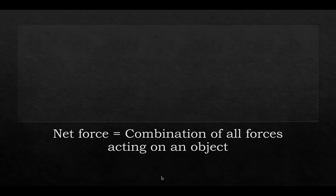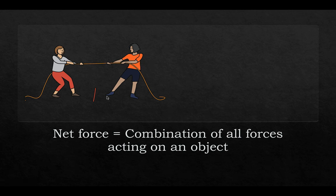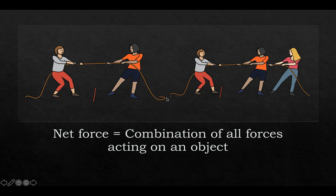Net force is the combination of all forces acting on an object. You think of one object, identify what forces are acting on it and how big they are, then you can either add or subtract them depending on direction. For example, these two young ladies are pulling on a rope in opposite directions. If they pull with the same amount of force, the forces cancel out and the net force is zero. If there is more force on one side, the net force will be in that direction and the rope will accelerate in the direction of the net force.